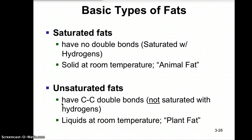Saturated fats are solid at room temperature; we often call these animal fat. Unsaturated fats have carbon-carbon double bonds, so they are not saturated with hydrogen atoms. Unsaturated fats are liquids at room temperature — these are plant fats. For example, the fat you cut away from a steak is a saturated animal fat, while vegetable oil, peanut oil, and corn oil are liquid unsaturated plant fats.